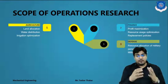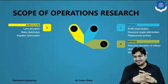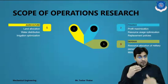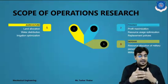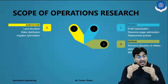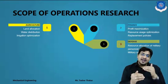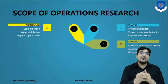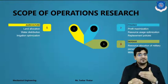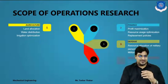The third scope is defense — in fact, Operation Research was originally invented for defense applications. It is used for resource allocation of military personnel and military operations. For example, in a surgical strike, every step of the military operation is carefully planned and executed for a successful outcome.